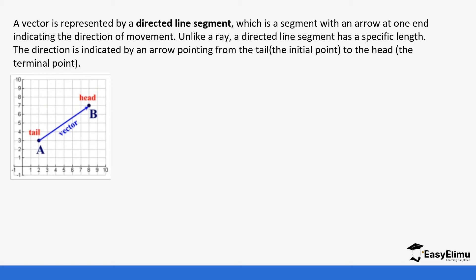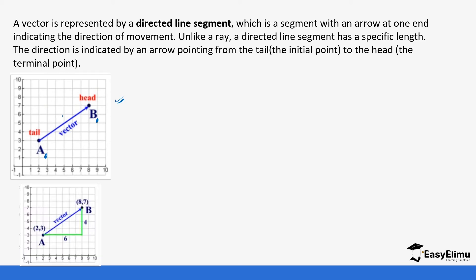If you look at the vector in the diagram below, you'll notice there is an arrow to show the distance moving from point A to point B, and you can also see it has a certain length. Unlike a ray, a directed line segment has a specific length. The direction indicated by the arrow points from the initial point — in this case point A — to the terminal point, which is point B.